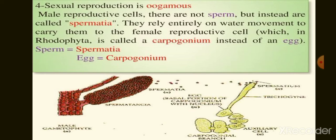So sexual reproduction is oogamous. The male gametophyte produces spermatangia, which produces male reproductive cells called spermatia. The female reproductive cell is carpogonium. In class Rhodophyta, reproduction takes place by three methods: vegetative, asexual, and sexual.